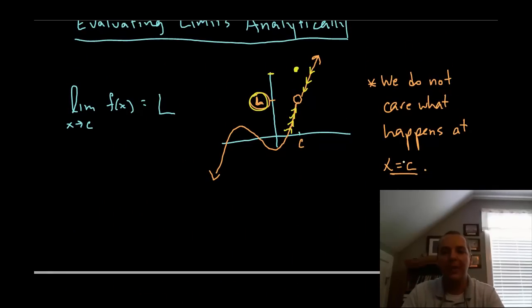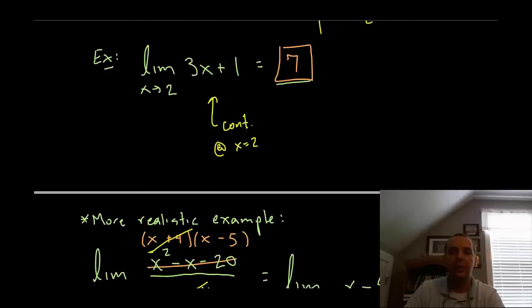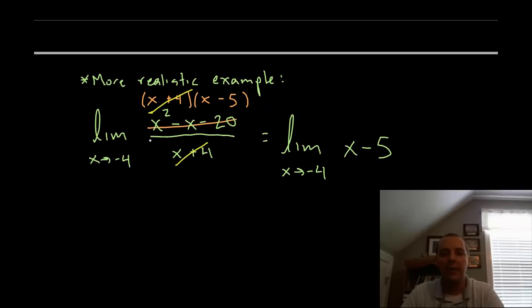So being that there is a discrepancy at negative 4 for me is irrelevant as far as the limit is concerned. Technically this function does differ from this function at one point, but that just happens to be the one point I don't care about.